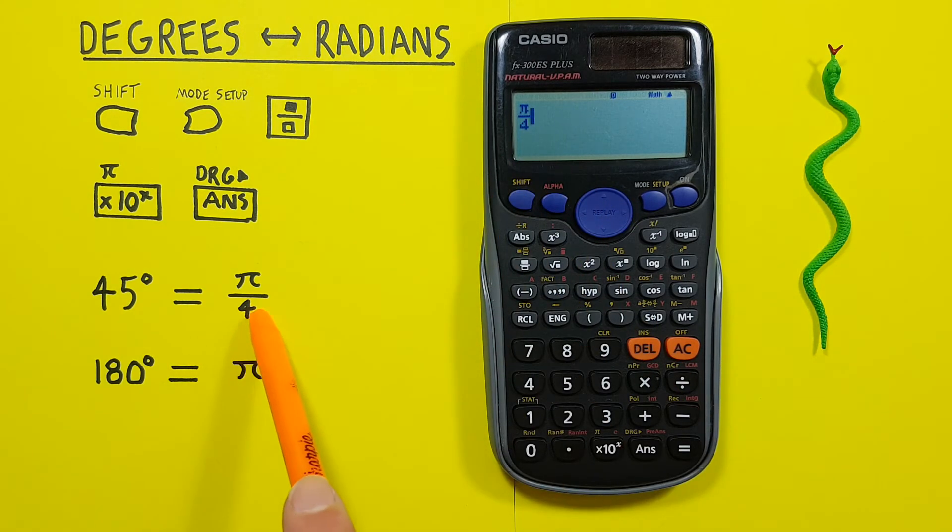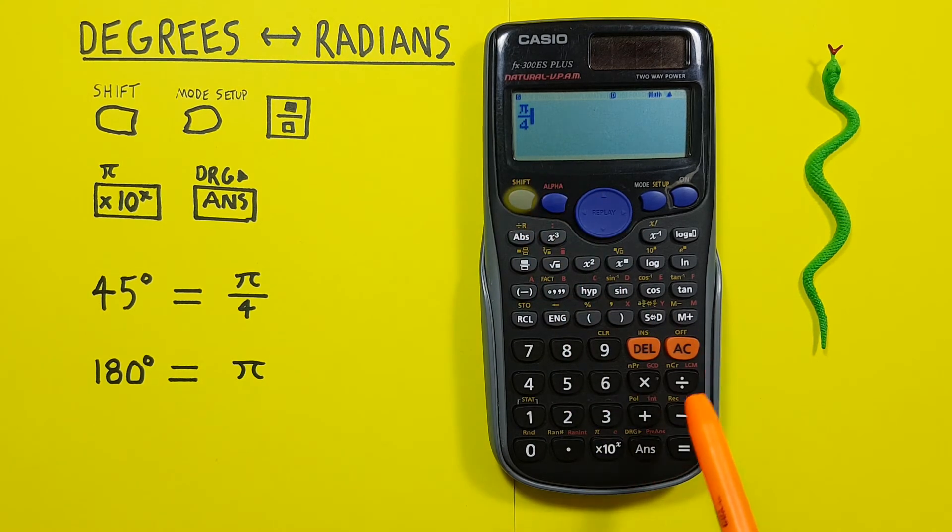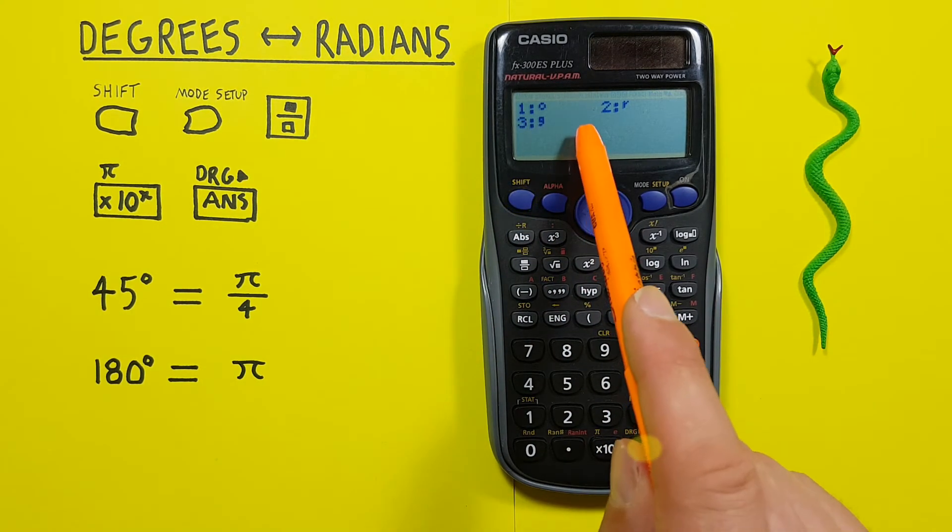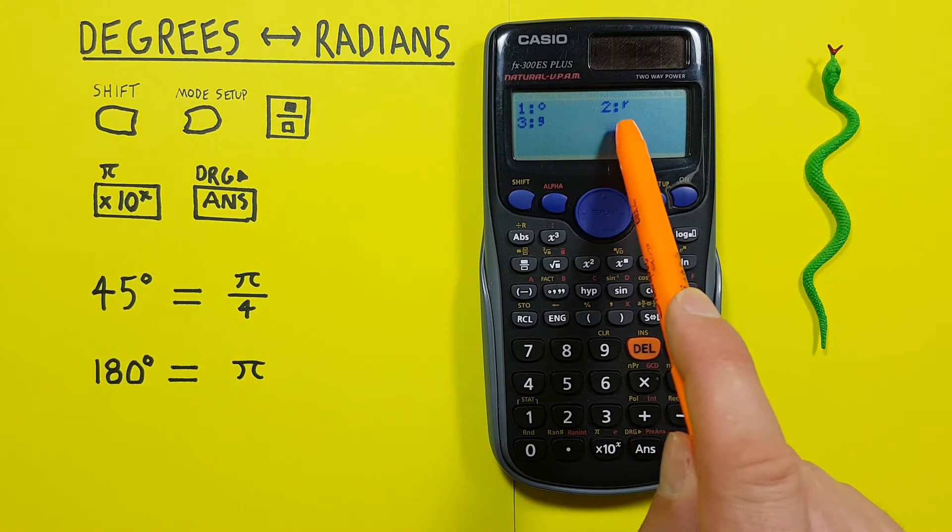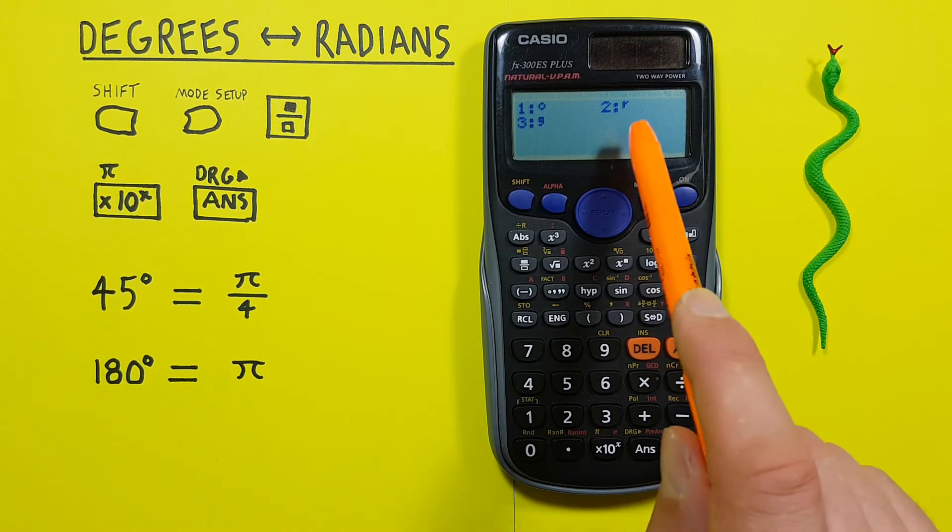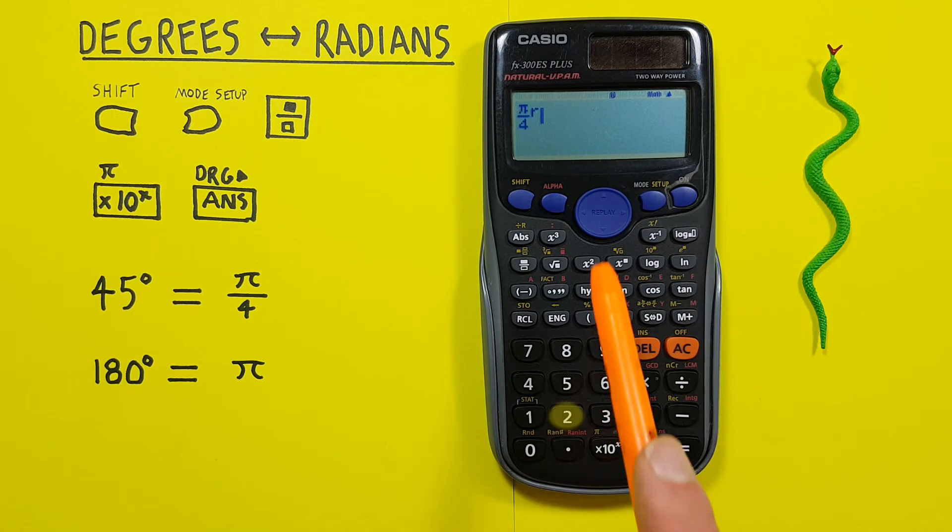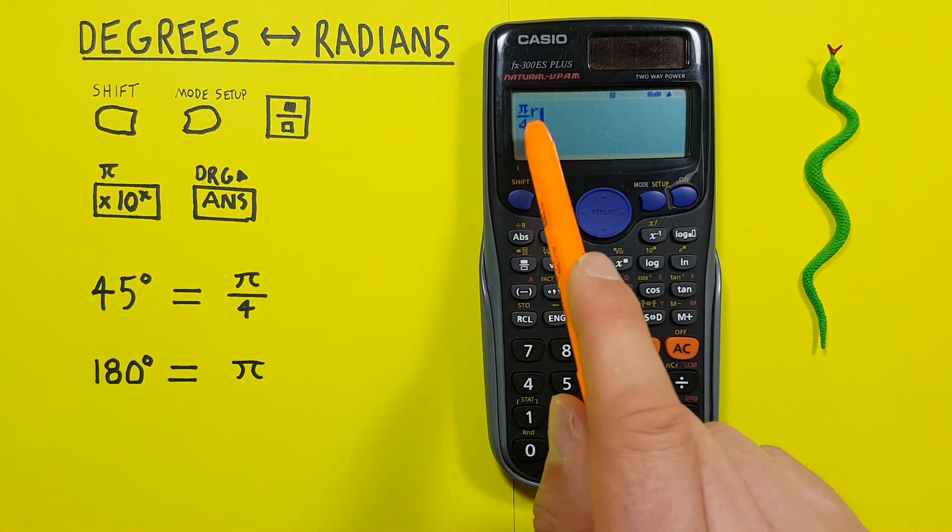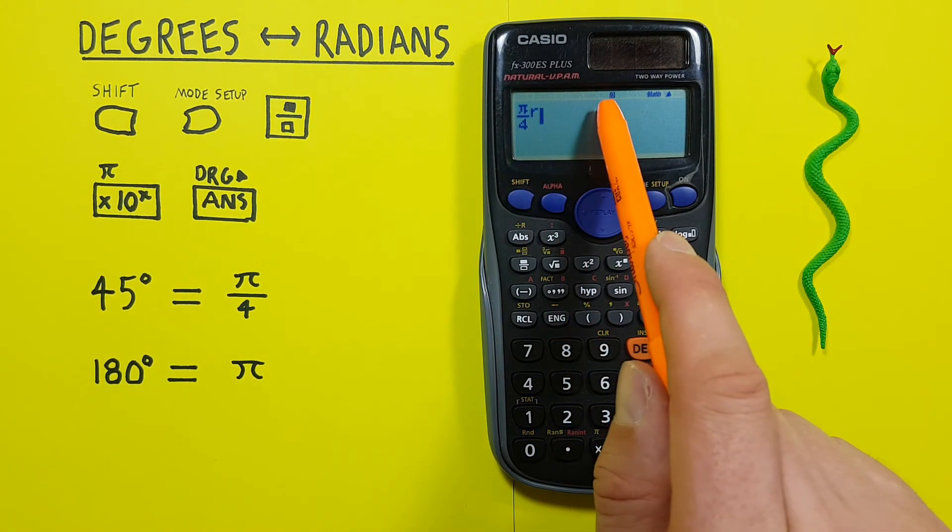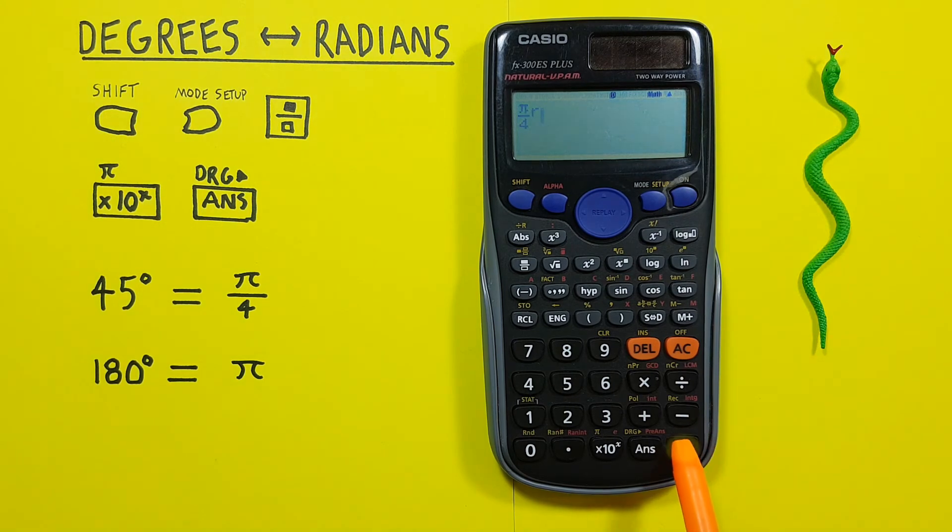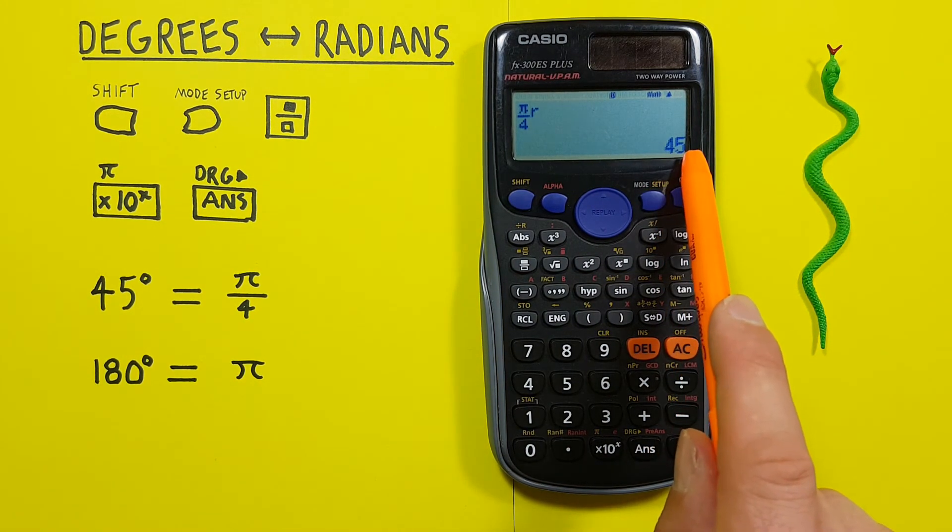Now we need to tell our calculator these are radians. So to do that, again, Shift and S, and then number 2 is radians. So we press 2, there we have pi over 4 radians. In degrees mode, press equals, and we see we get 45 degrees.